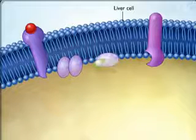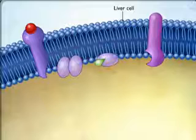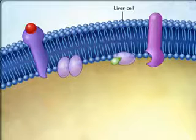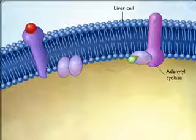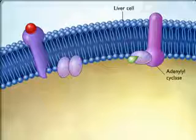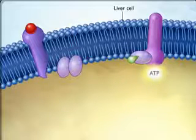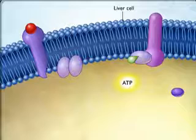The activated G protein subunit then diffuses within the plasma membrane until it encounters adenylyl cyclase, a membrane enzyme that is inactive until it interacts with the G protein subunit. When activated by the G protein subunit, adenylyl cyclase catalyzes the formation of cAMP from ATP.